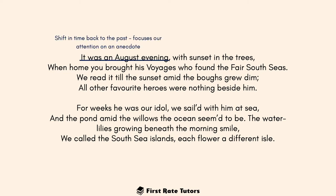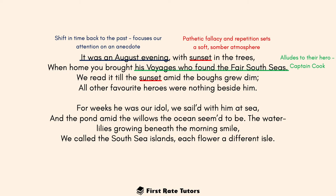In the third verse, the speaker goes back in time again — 'it was an August evening' — focusing attention on a specific anecdote. The word 'sunset' is repeated twice; this pathetic fallacy sets a soft, somber atmosphere and creates a nostalgic feeling. The speaker reveals that on this August evening the brother brought a book back about Captain Cook's journeys — his 'voyages,' which is the French word for journey. This alludes to the main part of the title. Then, 'all other favourite heroes were nothing beside him' — the hyperbole 'nothing' shows how much they admired Captain Cook.